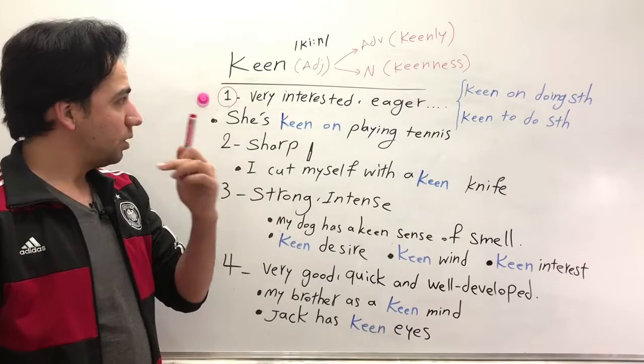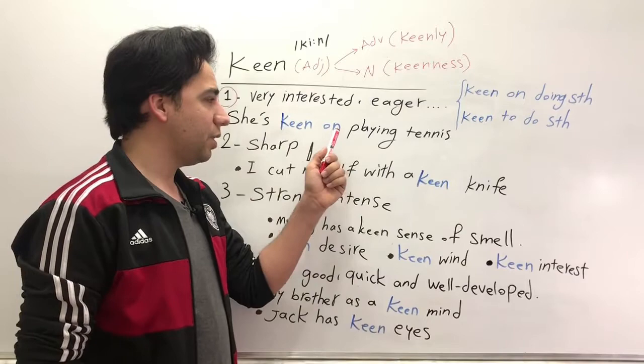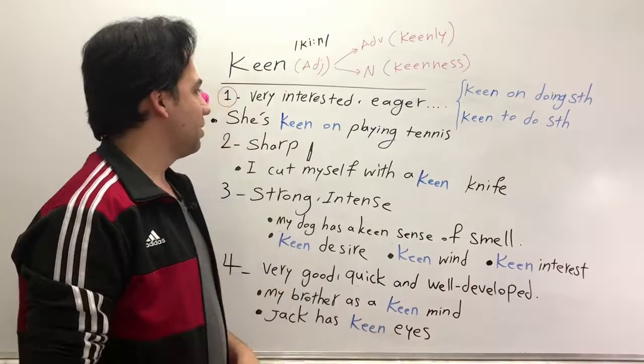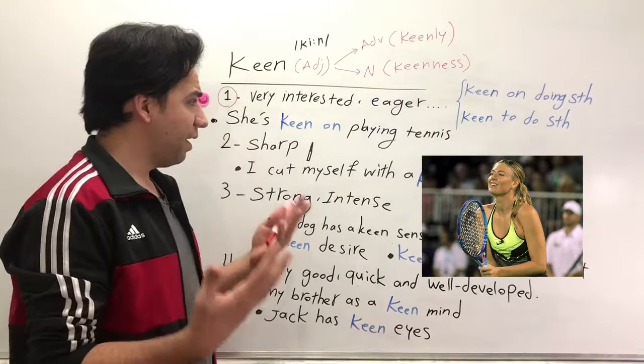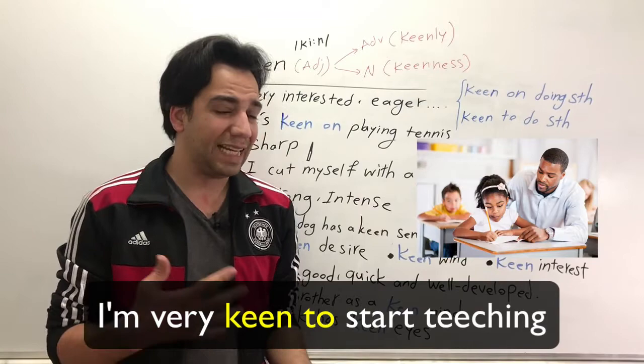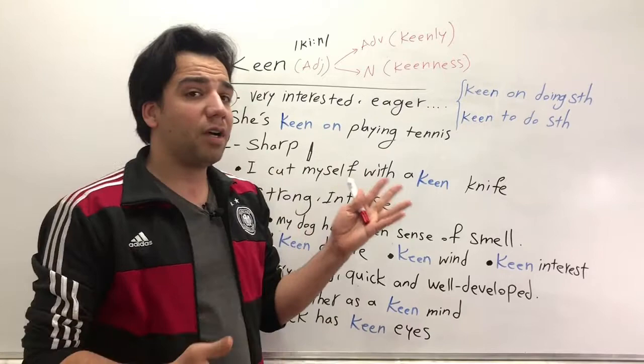Let's start with the first meaning of keen. The first and very common meaning of keen is very interested or eager. We have two structures here: keen on doing something, or keen to do something. For example, she's keen on playing tennis, which means she's very interested in playing tennis. Or for this structure we can say, I'm very keen to start teaching, which means I'm very interested in starting teaching. So this is the first and very common meaning of keen.